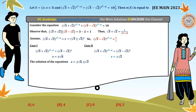The set S contains all real solutions of the given equation. Therefore the set S contains exactly four elements: ±√2 and ±√6. So m, the number of elements in the set, is equal to 4, and that's why option B is the correct answer for this problem. Hope you understood the problem, thank you.